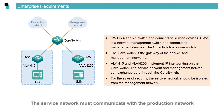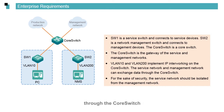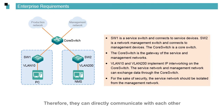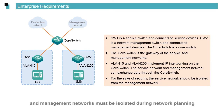The service network must communicate with the production network through the core switch. VLAN 200 also must communicate with the management network through the core switch. The gateways of VLAN 10 and VLAN 200 are the core switch. The two VLANs are directly connected to the core switch, so they can directly communicate with each other. However, to ensure security, the service and management networks must be isolated during network planning.